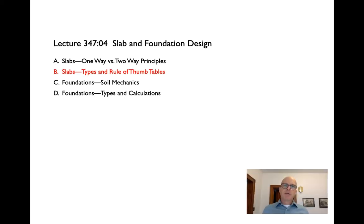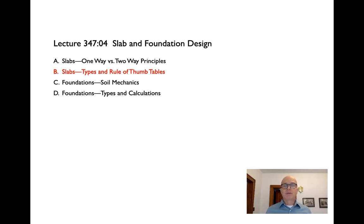Now that we've discussed the difference between one-way behavior and two-way behavior, and looked at the reasons we always want to increase slab efficiency by trying to spread load paths out in as many directions as we can, we'll look at how we do this in a variety of materials — mostly timber and concrete, but also some hybrid steel solutions. We'll look at how we design each of these types, and the good news is that instead of complicated math, we have a long history of empirical evidence giving us confidence to use basic rule-of-thumb tables to calculate most floor thicknesses.